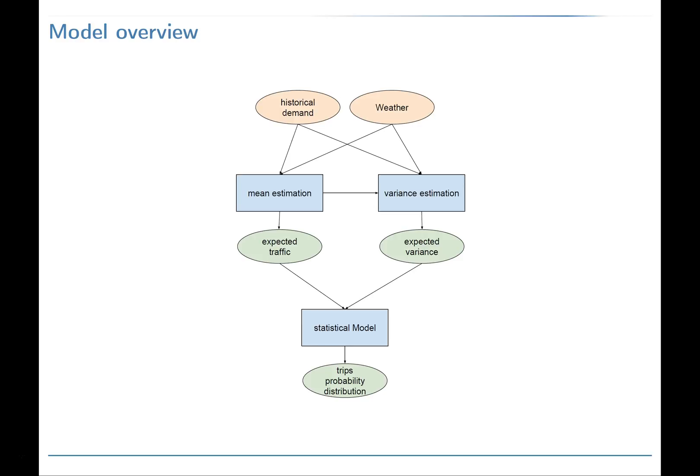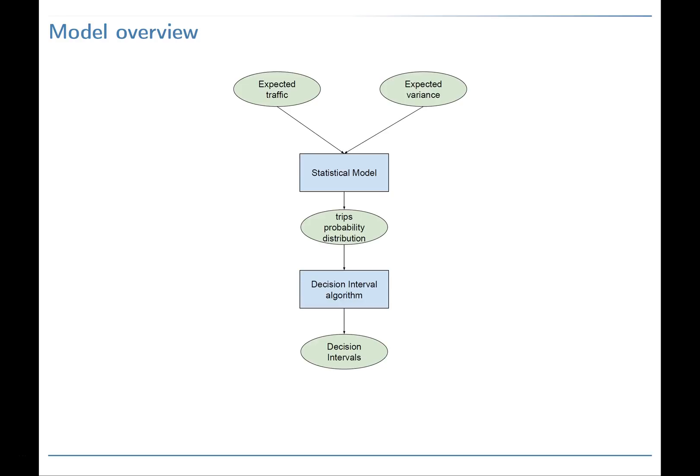Based on these values, our model builds a statistical model that estimates the probability distribution of the number of trips at each station. This model is then used to design the inventory intervals that satisfy a minimum service level. The methodology is adjusted according to the service level desired by the service provider.